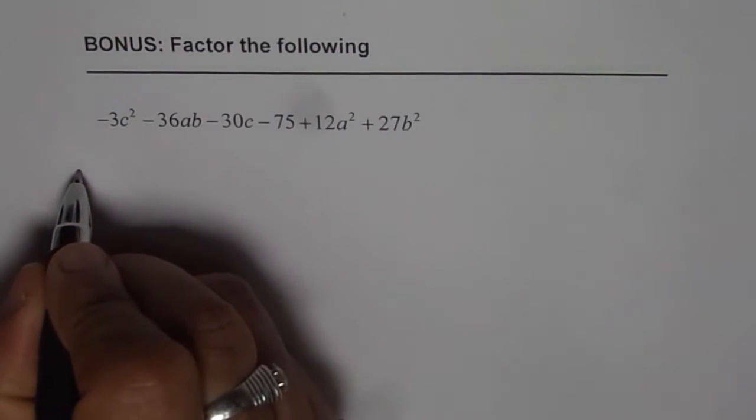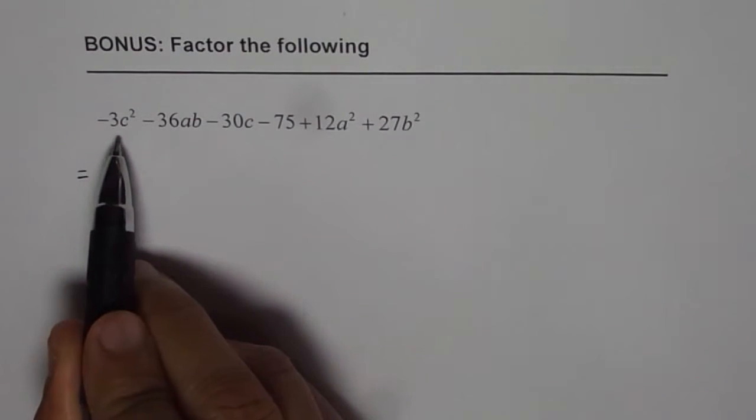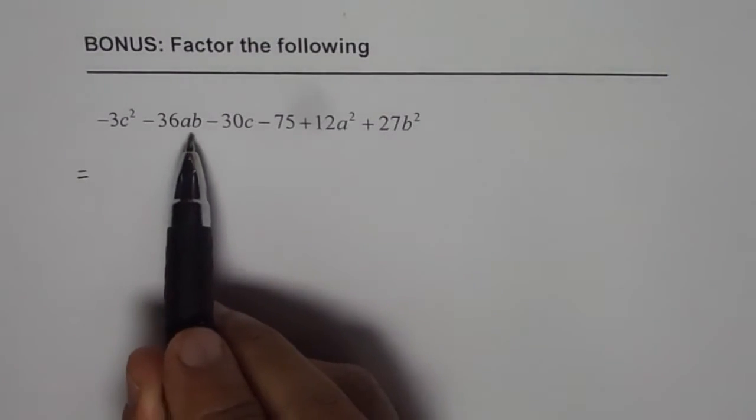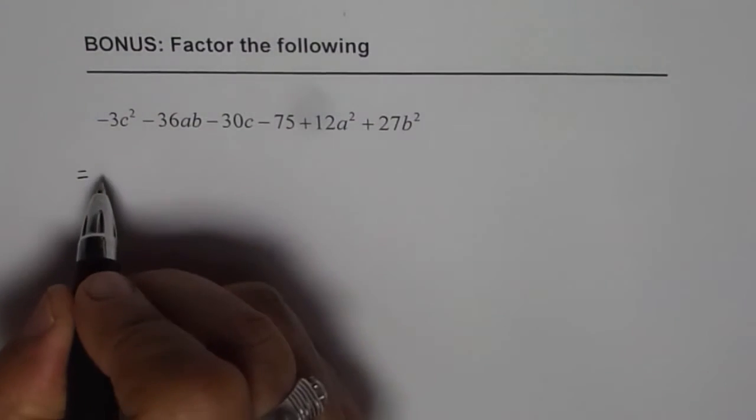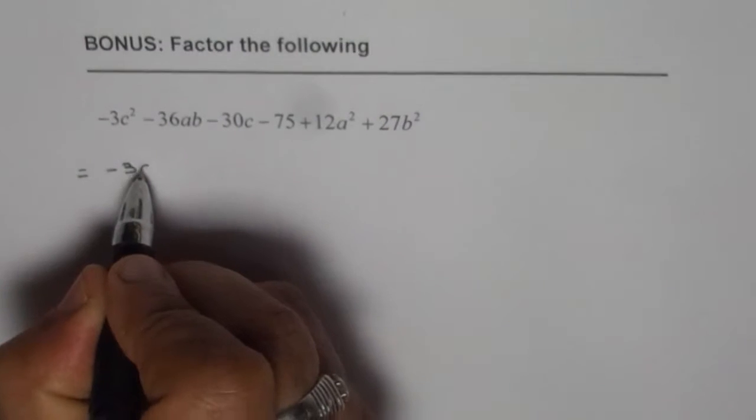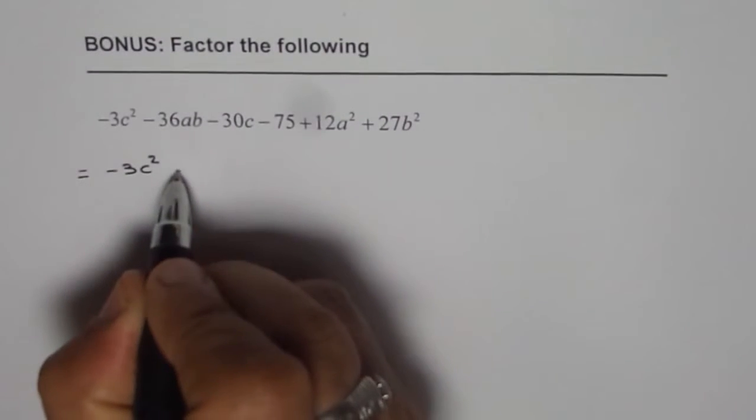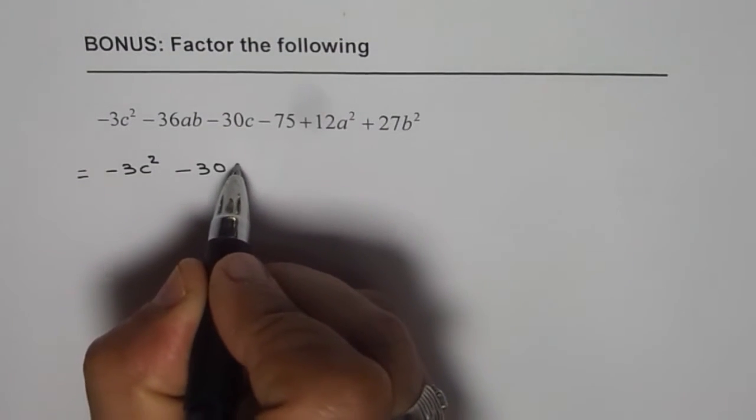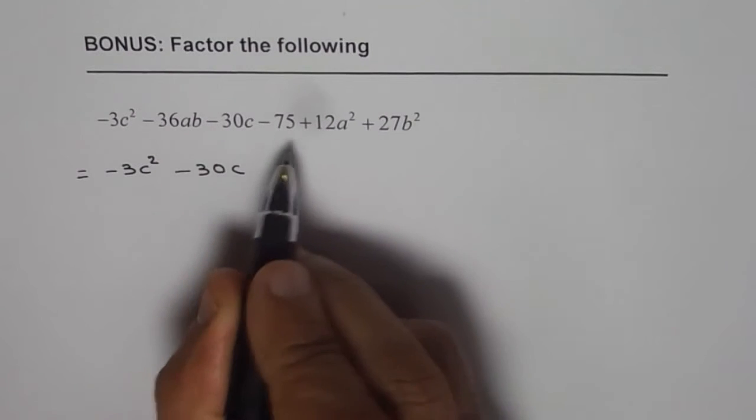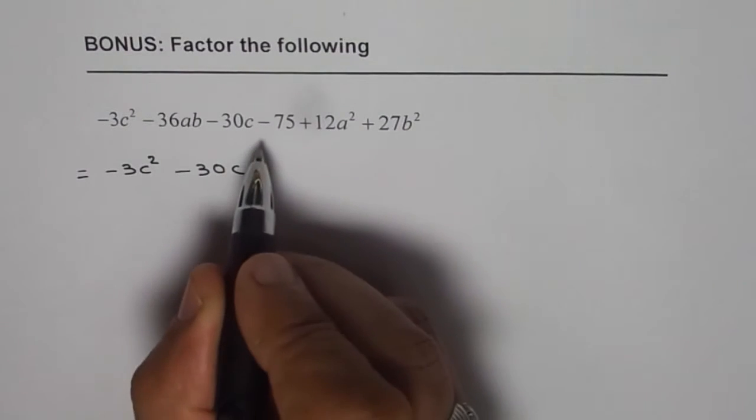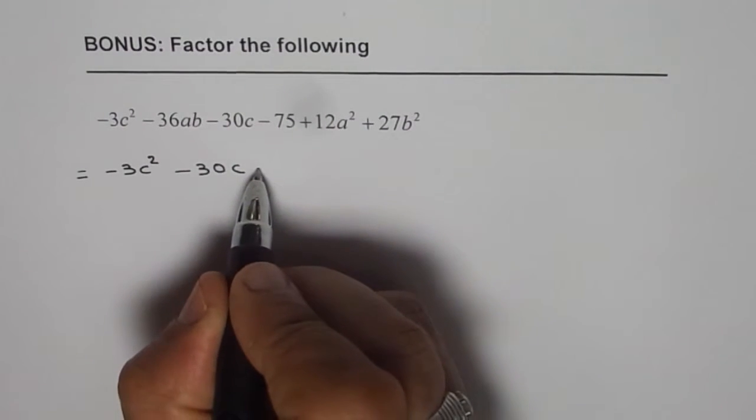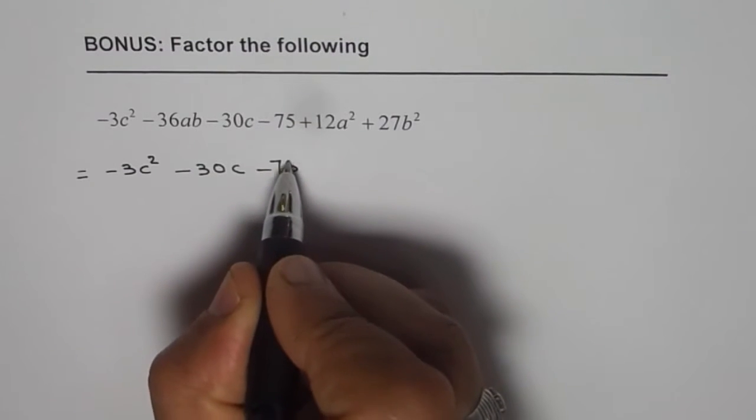So what we will do is we'll club the terms with c's together since a and b is combined. So let's take minus 3c square then we have minus 30c and since there are six terms let me take 75 with the c's. So we have minus 75.